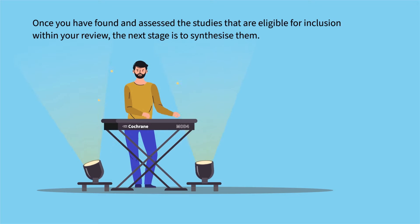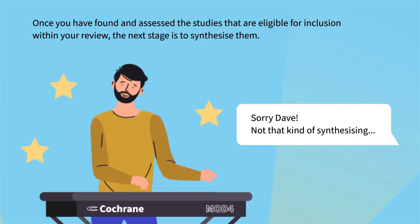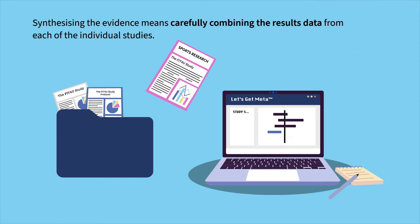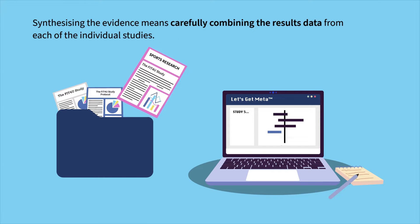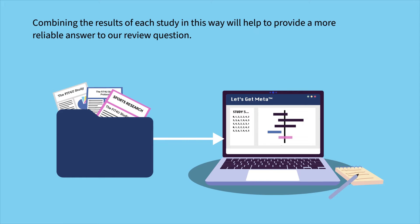Once you have found and assessed the studies that are eligible for inclusion within your review, the next stage is to synthesise them. Synthesising the evidence means carefully combining the results data from each of the individual studies. Combining the results of each study in this way will help provide a more reliable answer to our review question.